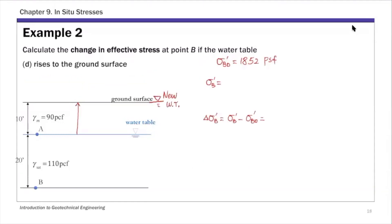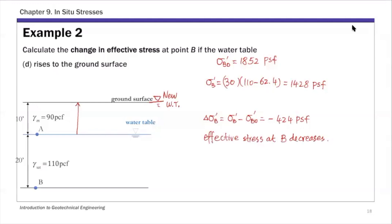Part D is relatively easy: with the water table at ground surface, all 30 feet of soil are saturated. So effective stress is 30 times the buoyant unit weight: 30 times (110 minus 62.4), giving 1428 psf. The change in effective stress is 1428 minus 1852, which is negative 424 psf. This means effective stress at B decreases when the water table rises.